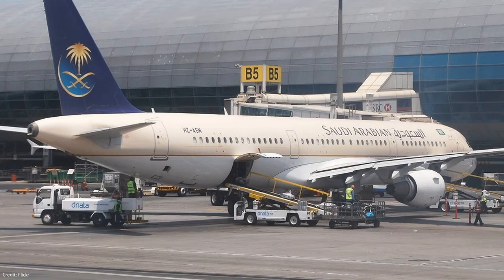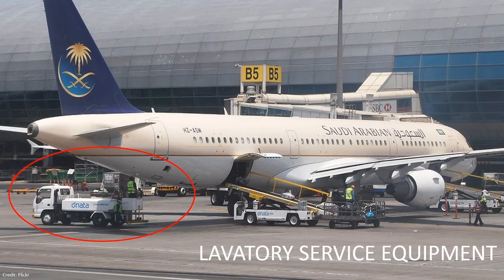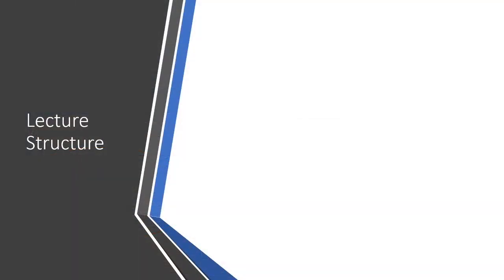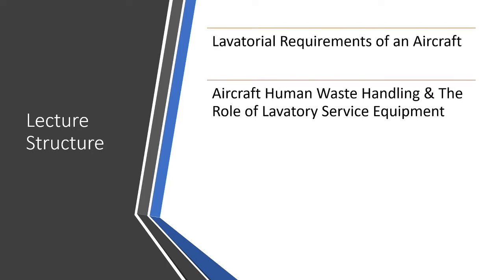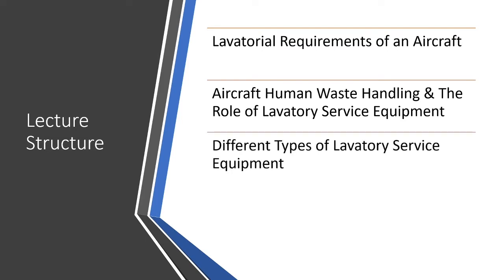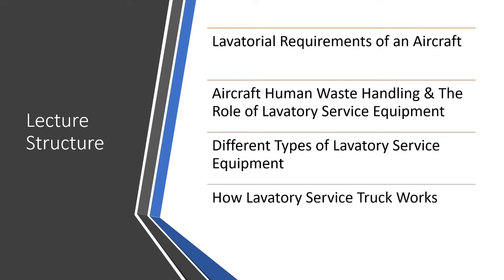We are going to talk about the ground support equipment responsible for removing human waste from the aircraft. It is called lavatory service equipment. We will begin the lecture with an overview of lavatory requirements of an aircraft, how aircraft handles human waste in flight, what role lavatory service equipment plays on ground, the different types used at airports, and the major components of a lavatory service truck.